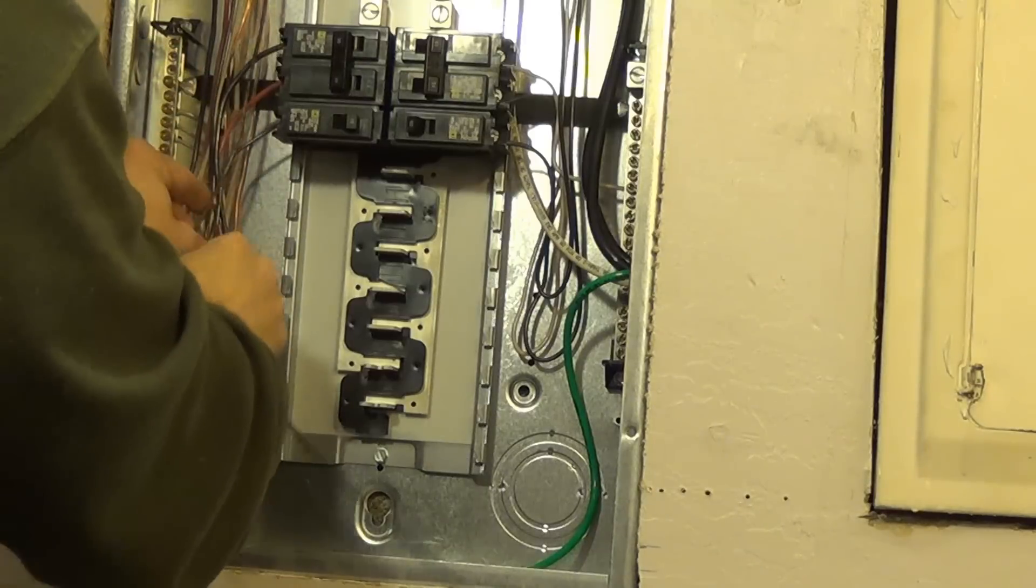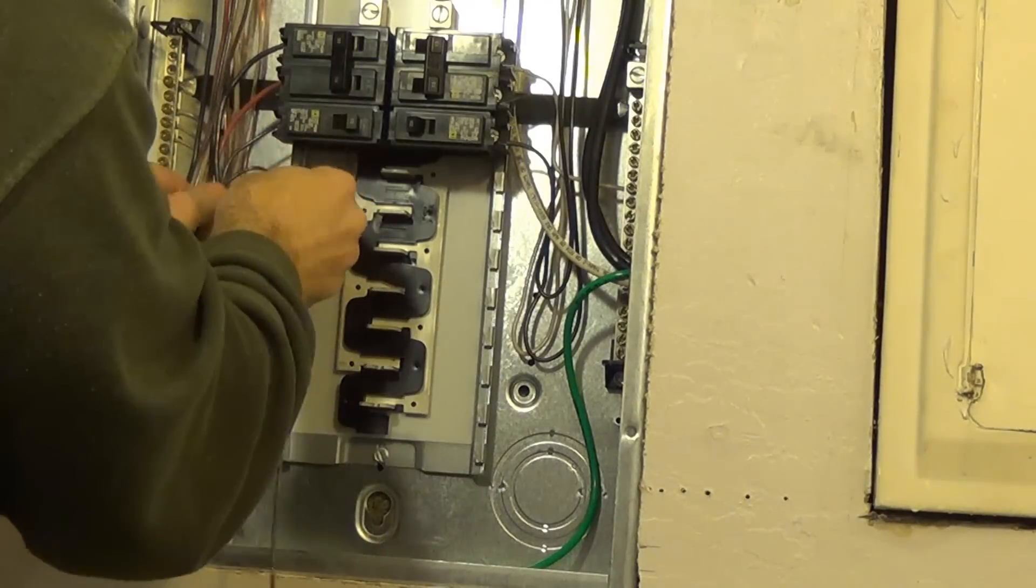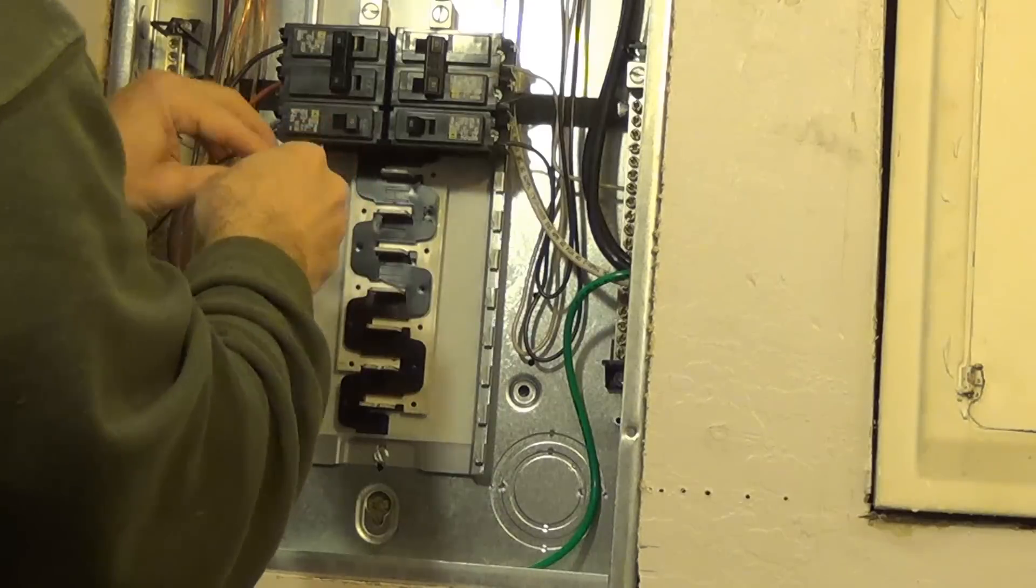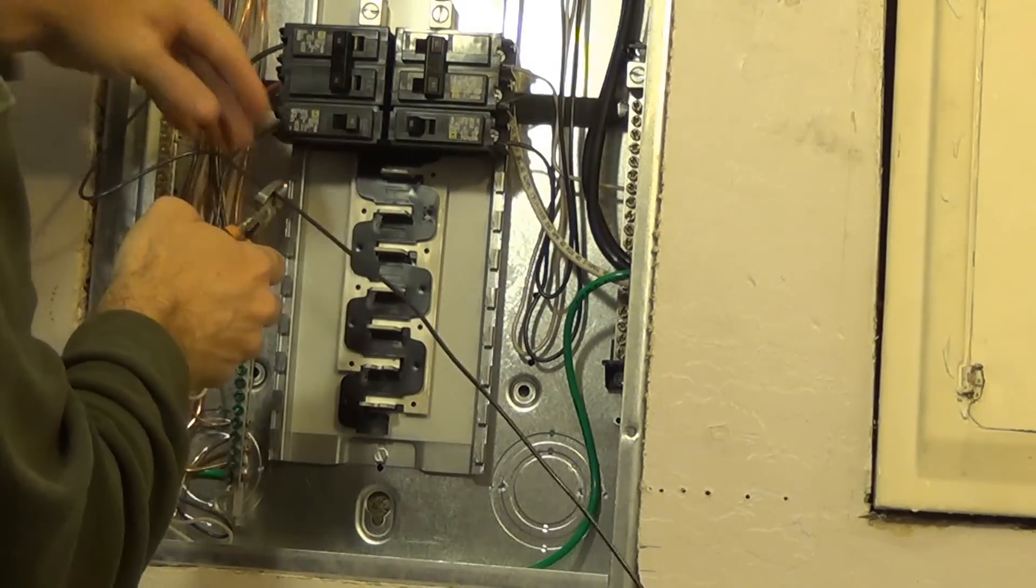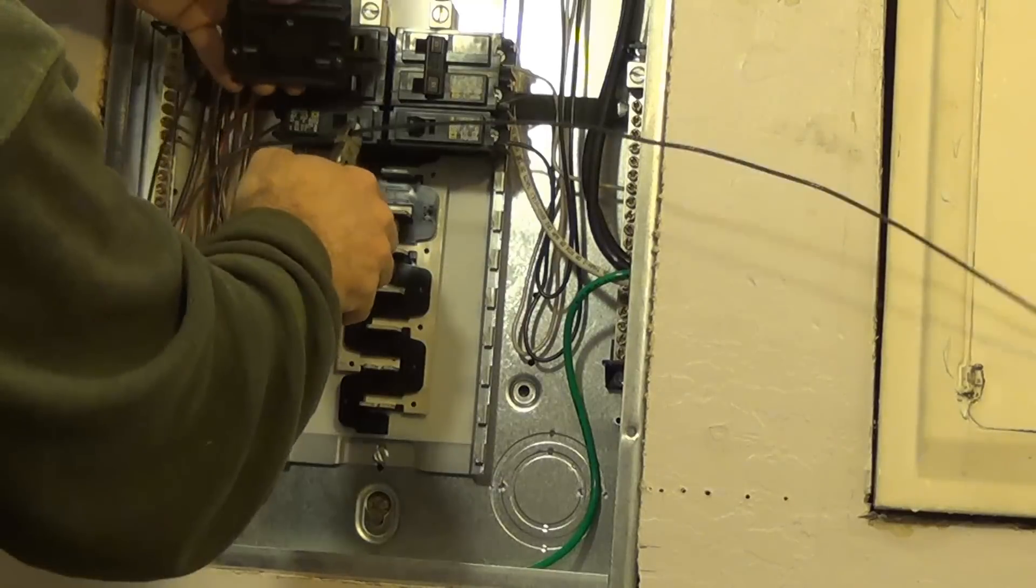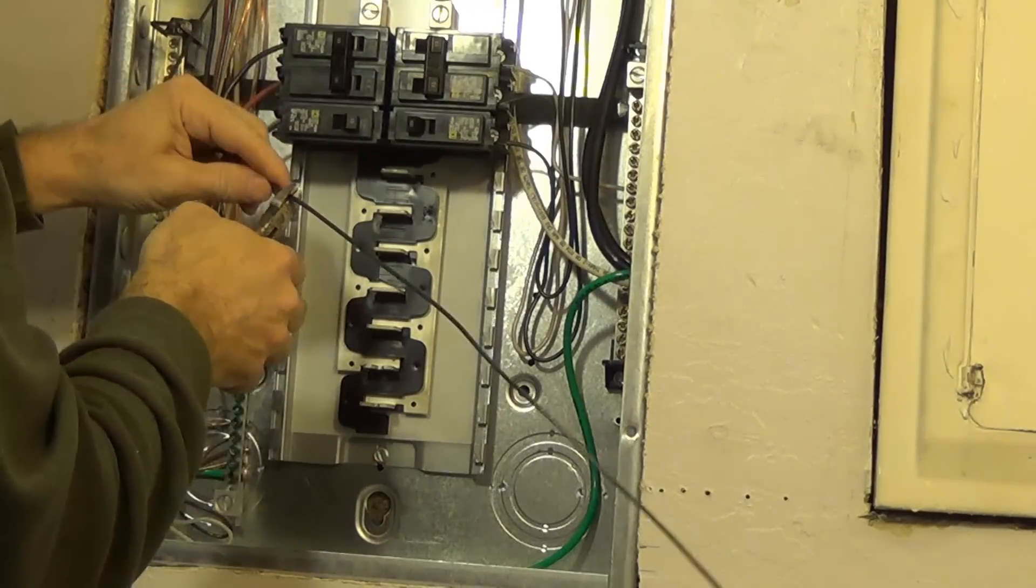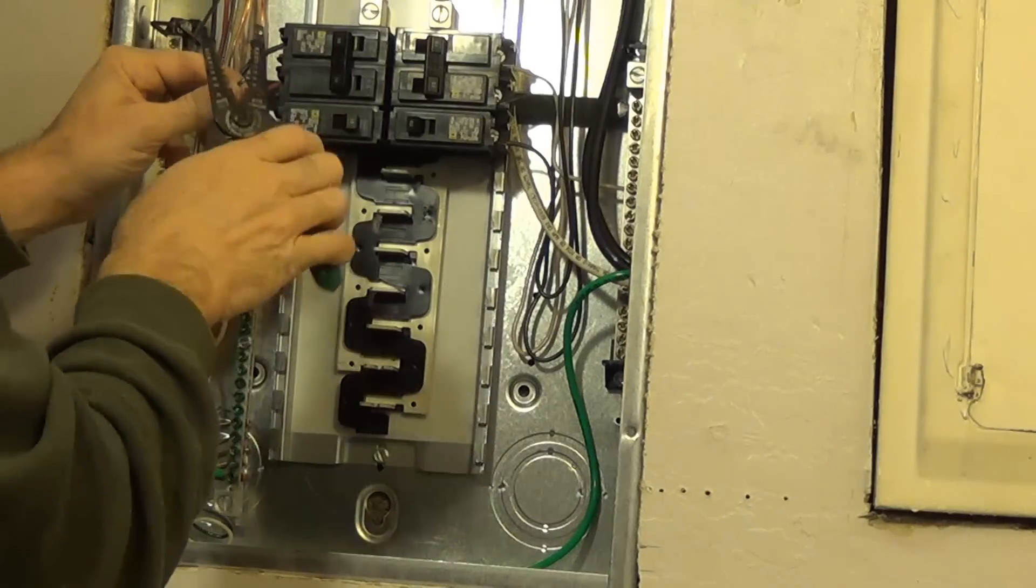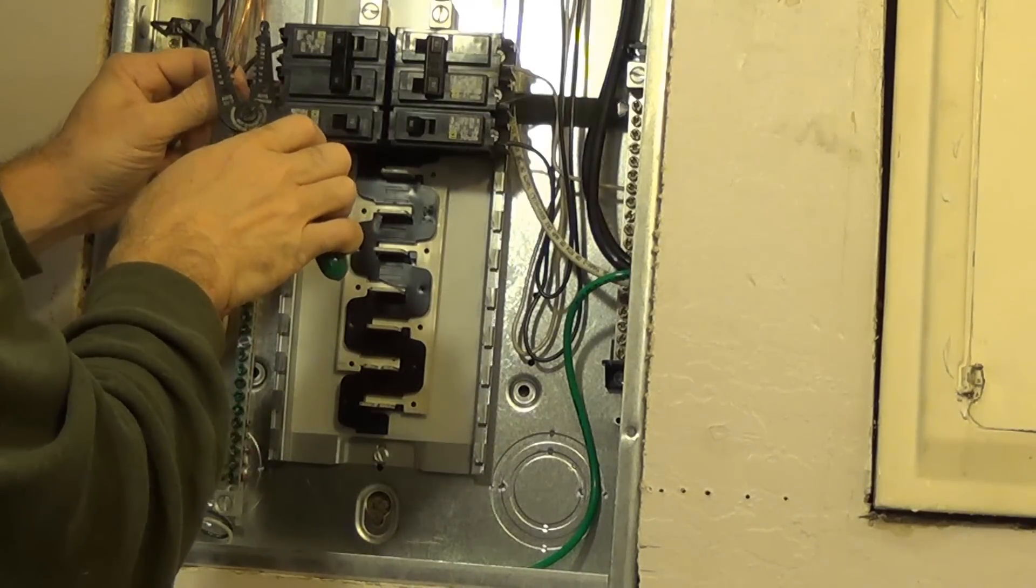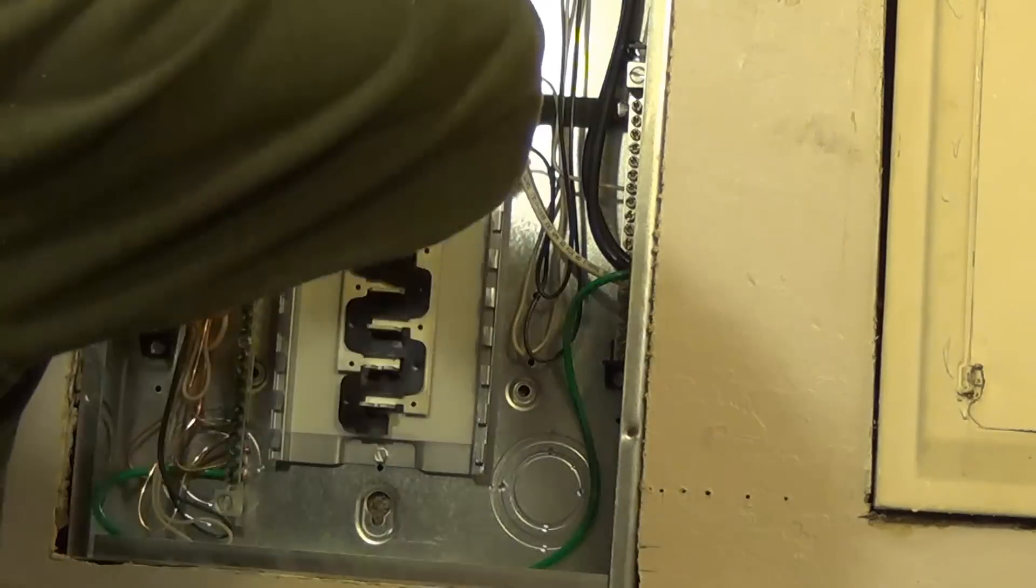Next you want your black wire, so we're going to connect it right about there to the breaker. Trim off again about another half inch from the tip to expose the wire.